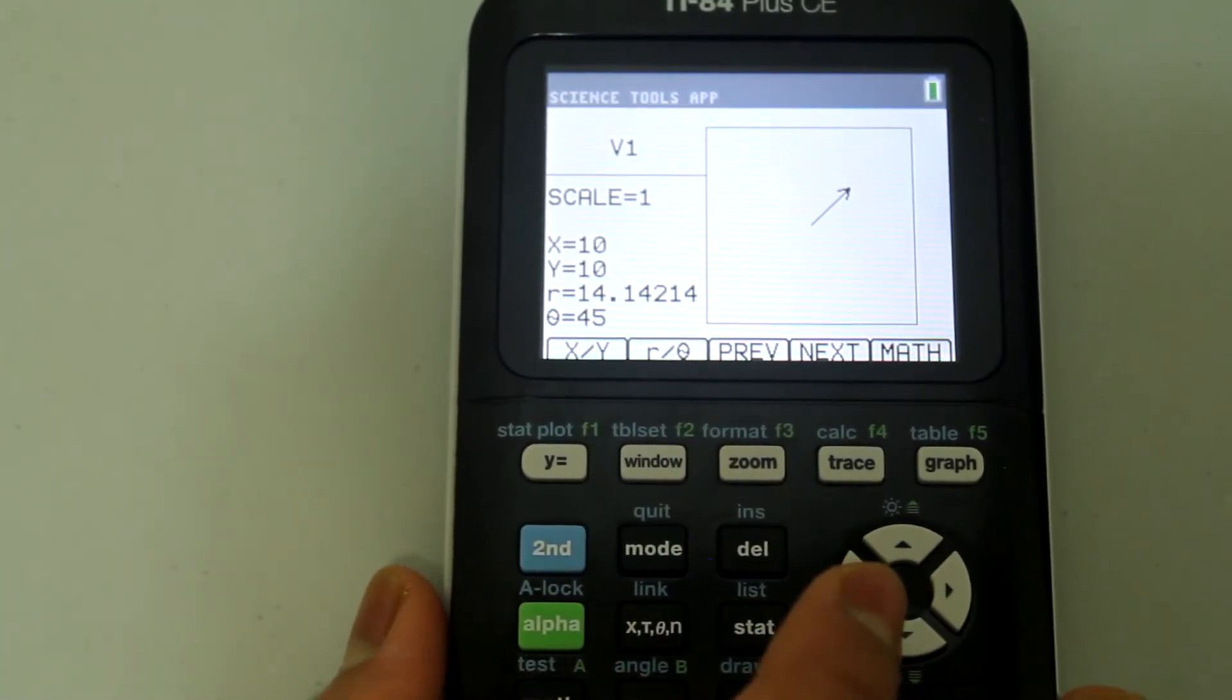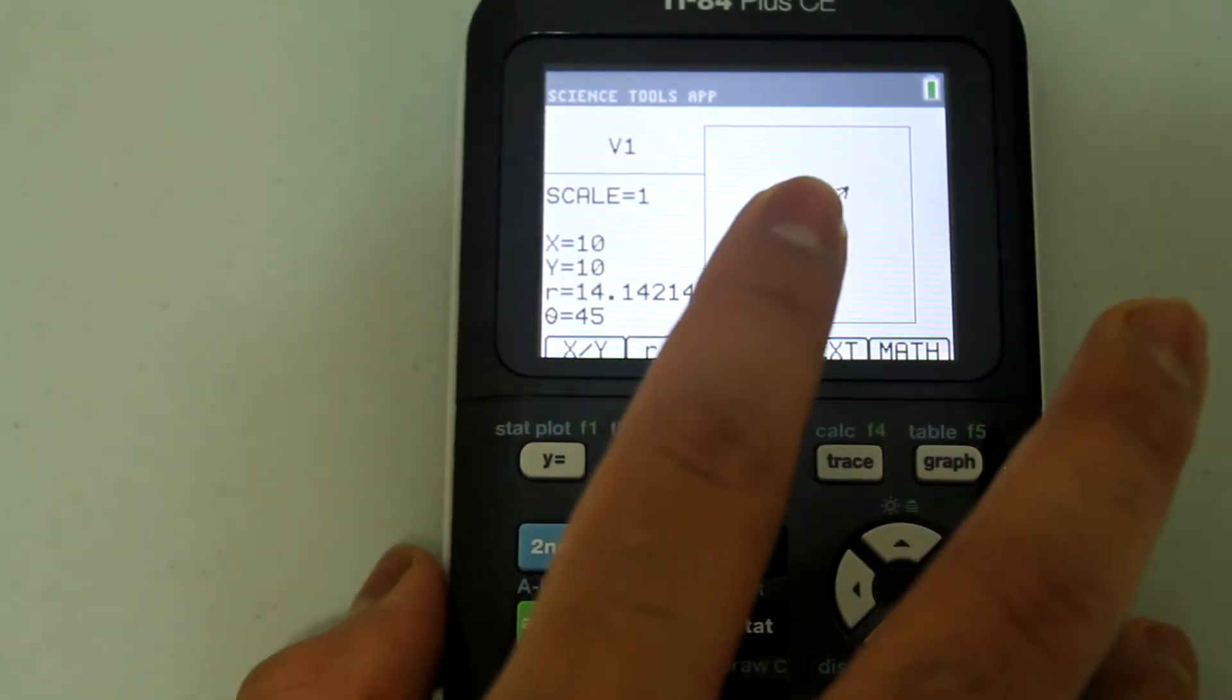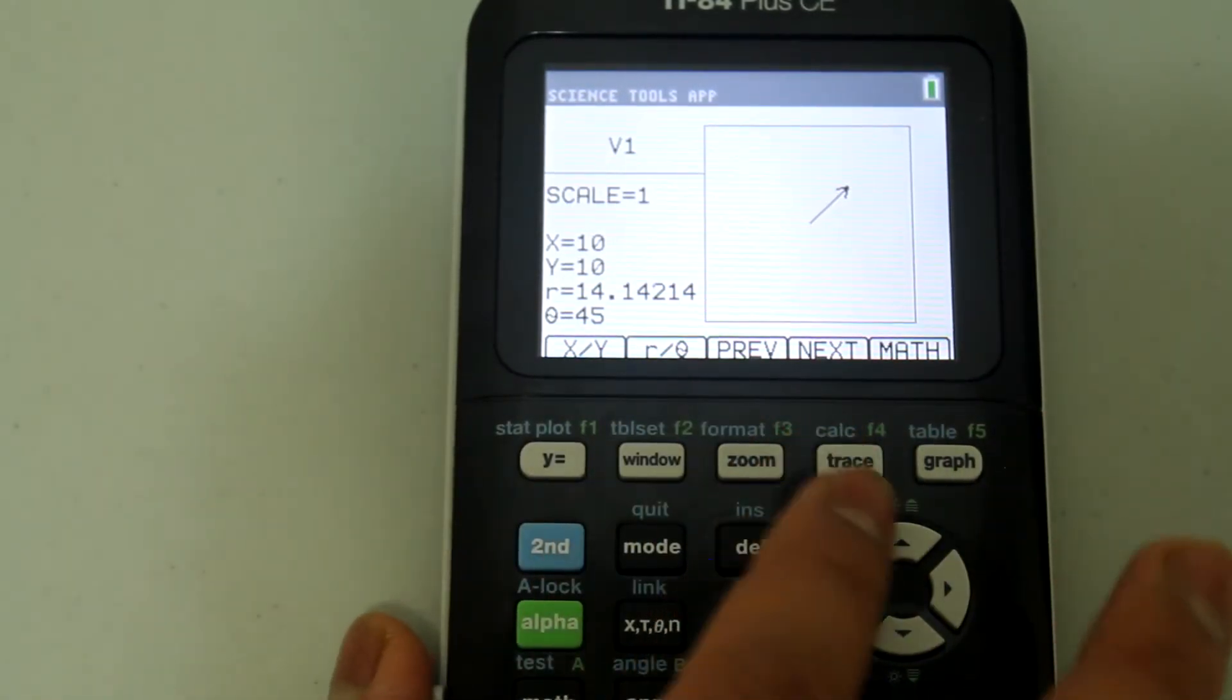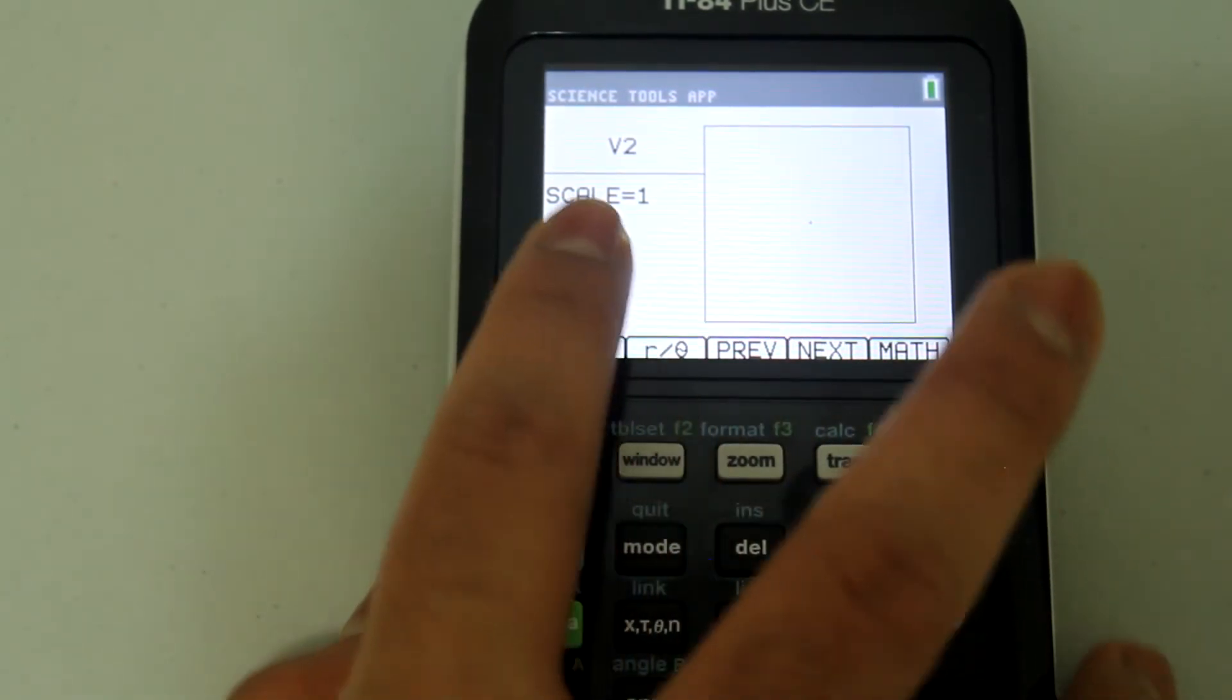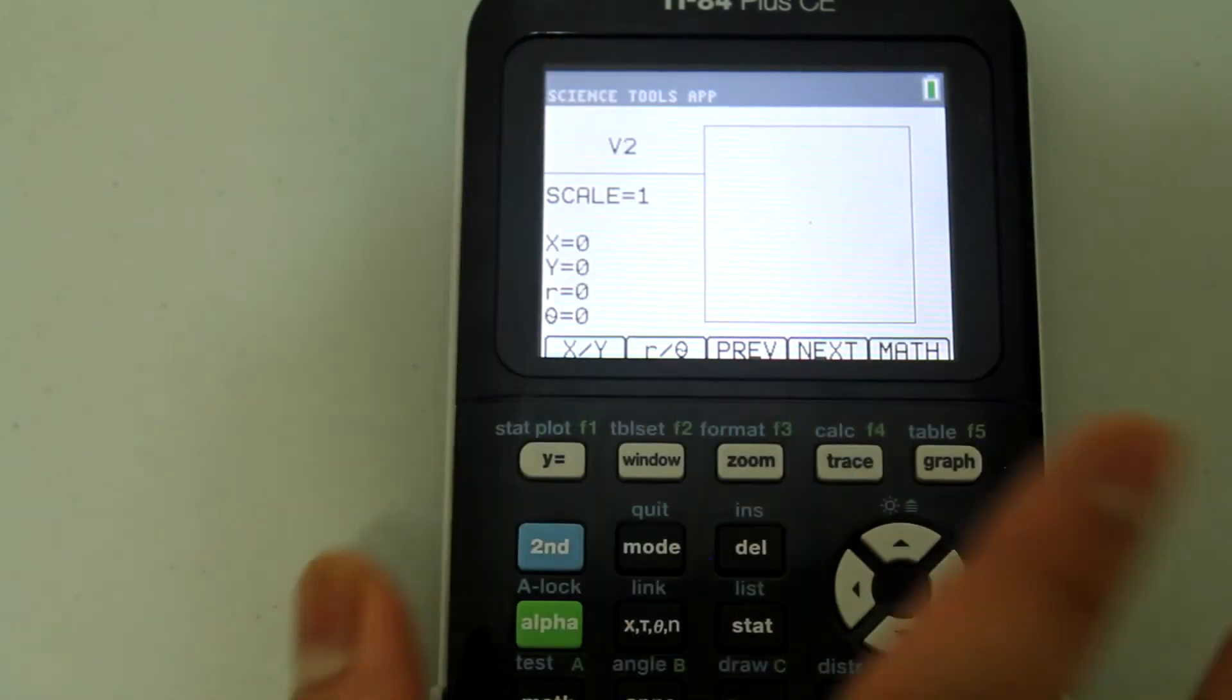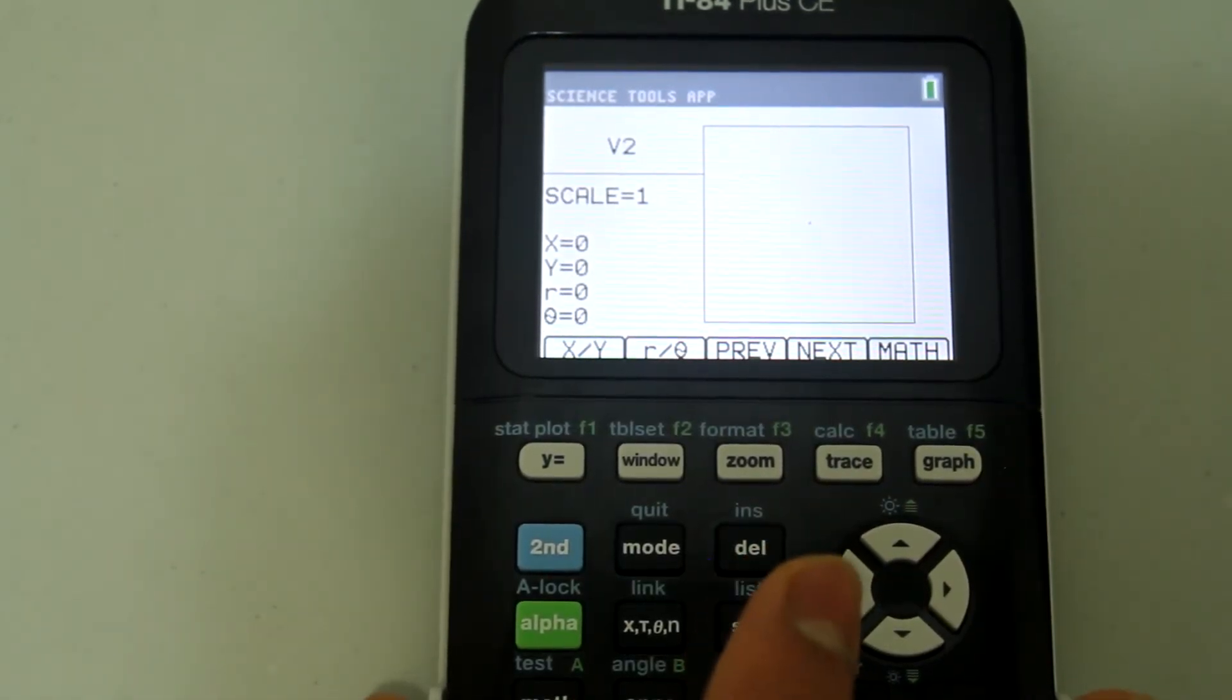Now let's do another one. But we want to store this vector v1 for future calculations. So press the button under next which is the trace button and notice that it says v2 now. So we're plotting another vector.